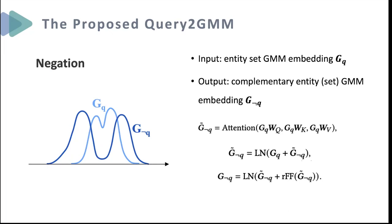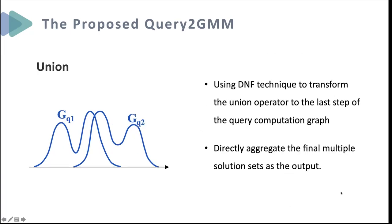The aim of the negation operator is to identify complementary states of the given entity state according to the global cross-correlation among its components. We utilize a self-attention block layer while excluding positional encoding to model the negation operator, encouraging each sub-distribution's embedding to shift towards areas not covered by the given entity state. For the union operator, we use disjunctive normal form technique to transform the union operator to the last step of the query computation graph, and directly aggregate the final multiple solution states as the output.